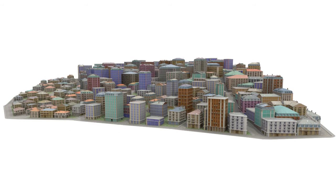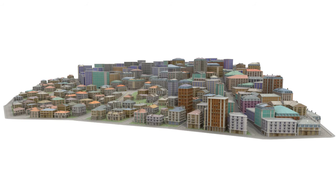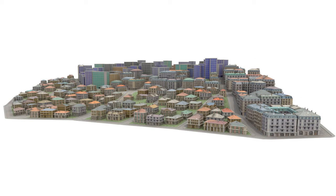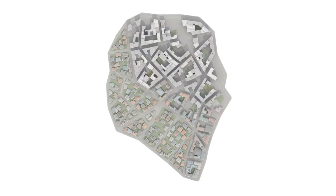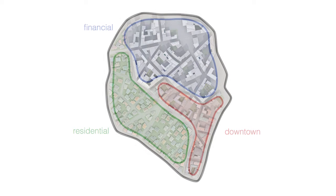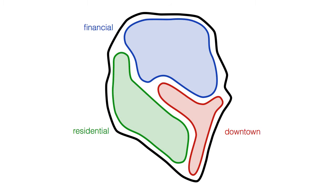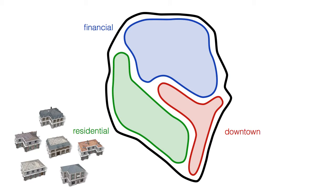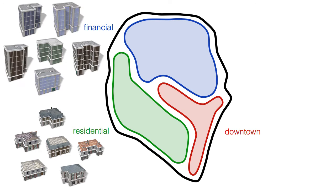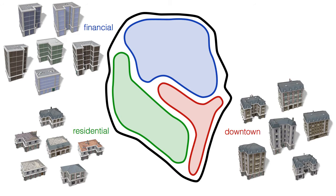We propose a workflow that enables a user to control the distribution of generated buildings. For example, the user might want to subdivide the city into three regions: generating small residential buildings for the residential area, office buildings for the financial district, and buildings in the Osmanian architectural style for the Parisian-like downtown.